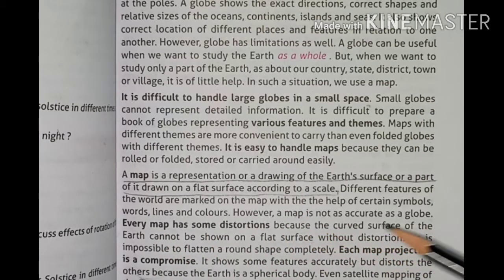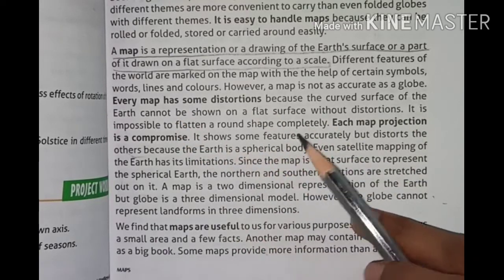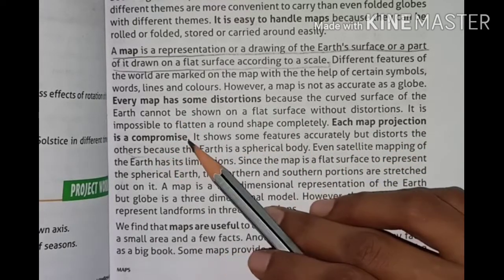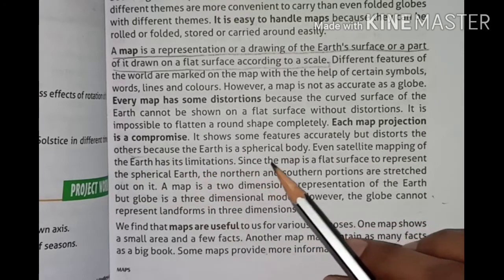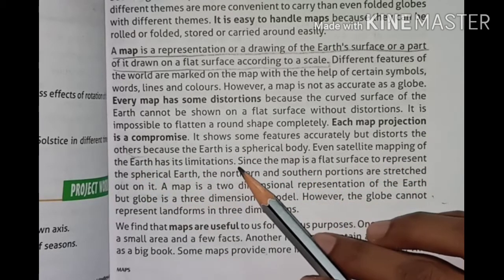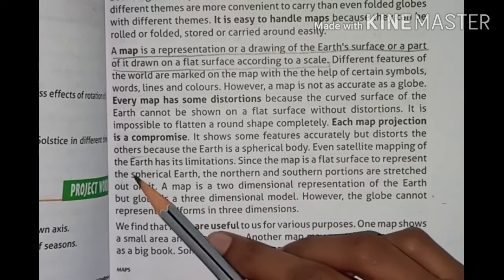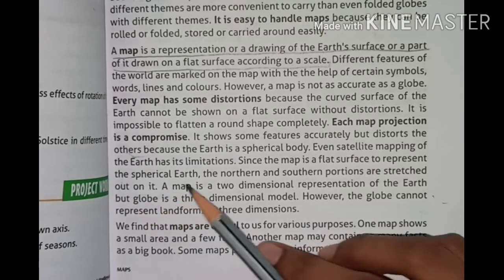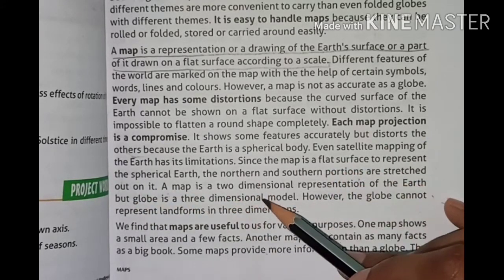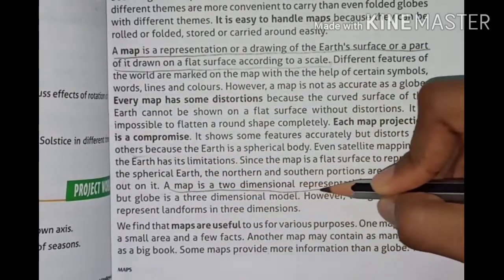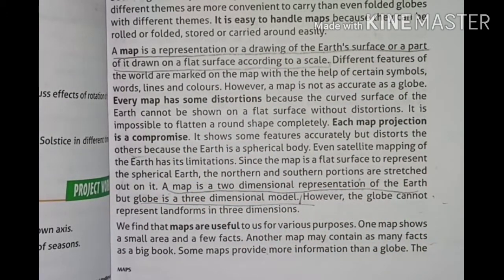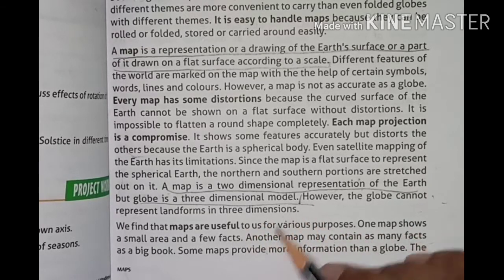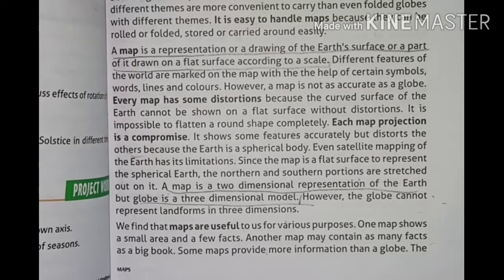Every map has some distortions because the curved surface of the earth cannot be shown on a flat surface without distortion. It is impossible to flatten a round shape completely. Each map projection is a compromise. It shows some features accurately but distorts the others because the earth is a spherical body. Even satellite maps of the earth have limitations. Since the map is a flat surface to represent the spherical earth, the northern portions are stretched out on it. A map is a two-dimensional representation of the earth, but the globe is a three-dimensional model.